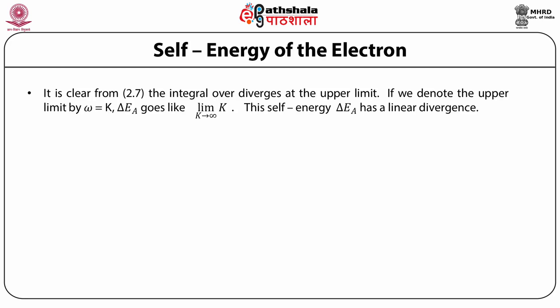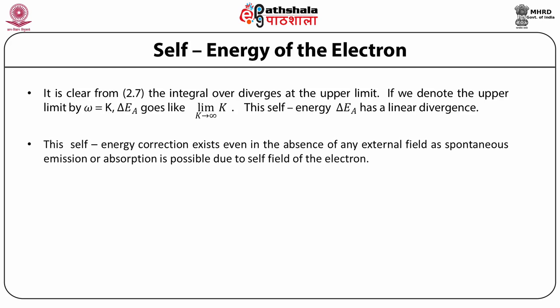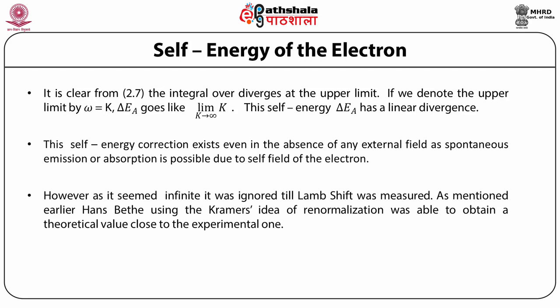If we denote the upper limit by omega equal to capital K, delta Ea goes like limit of K as K goes to infinity. This self-energy delta Ea therefore has a linear divergence — it goes linear in K. This self-energy correction exists even in the absence of any external field as spontaneous emission or absorption is possible due to the self-field of the electron. However, as it seemed infinite, it was ignored till the Lamb shift was measured.